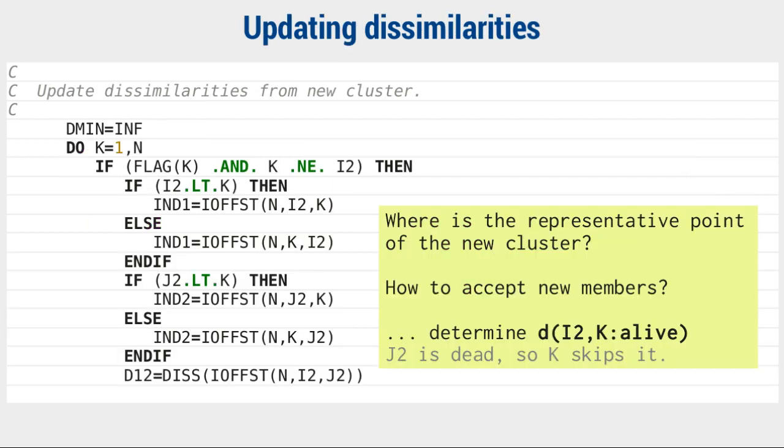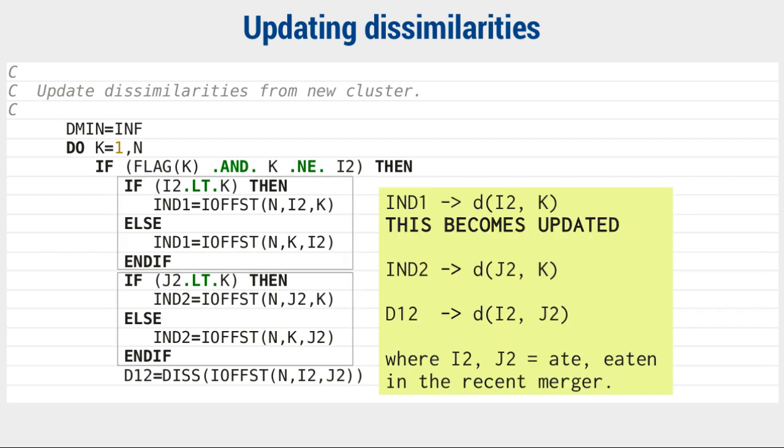Two clusters are gone and one new cluster has come. The new cluster is indexed by i2, and thus all dissimilarities between i2 and all alive members, except i2 itself of course, need to be updated. But the formula that determines these distances refer to the very values we are invalidating, which are the three distances.